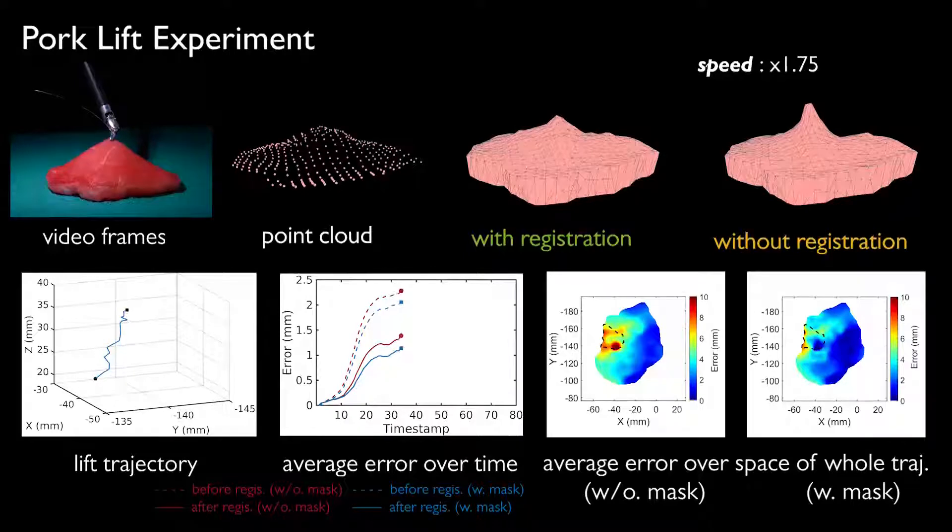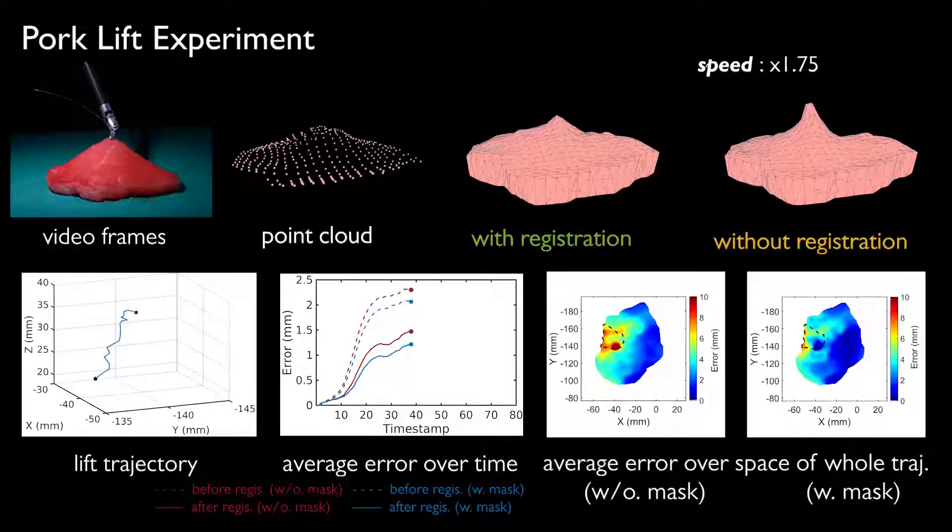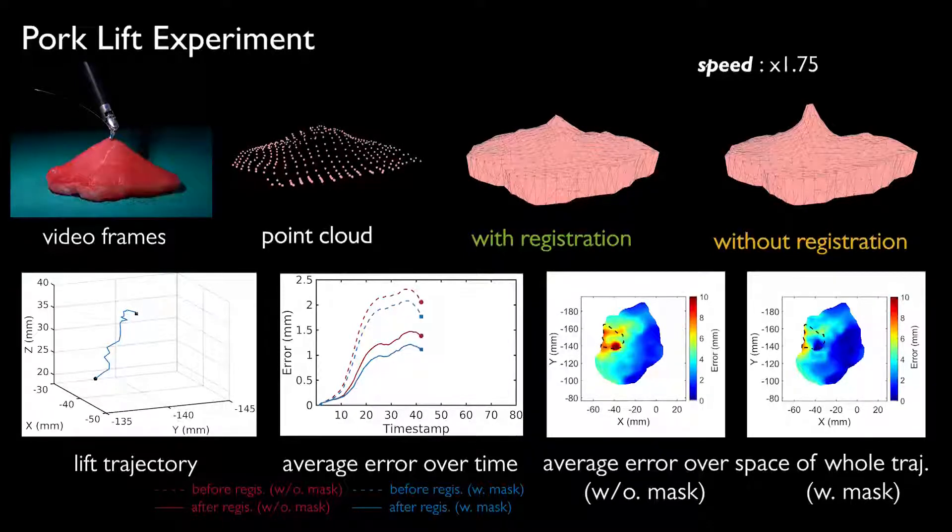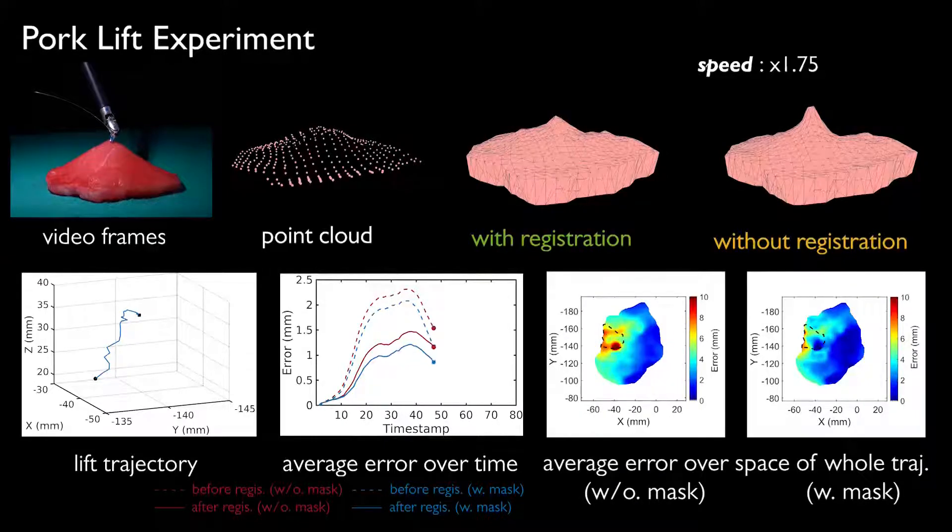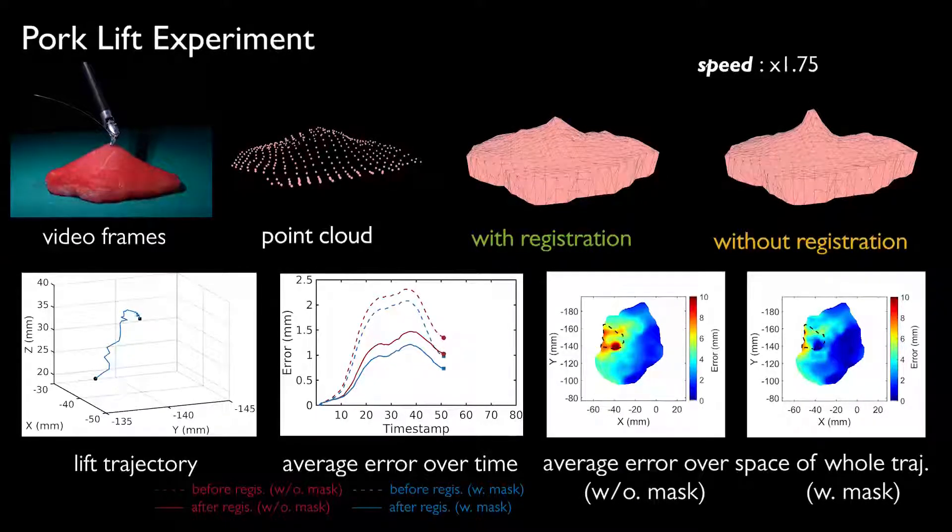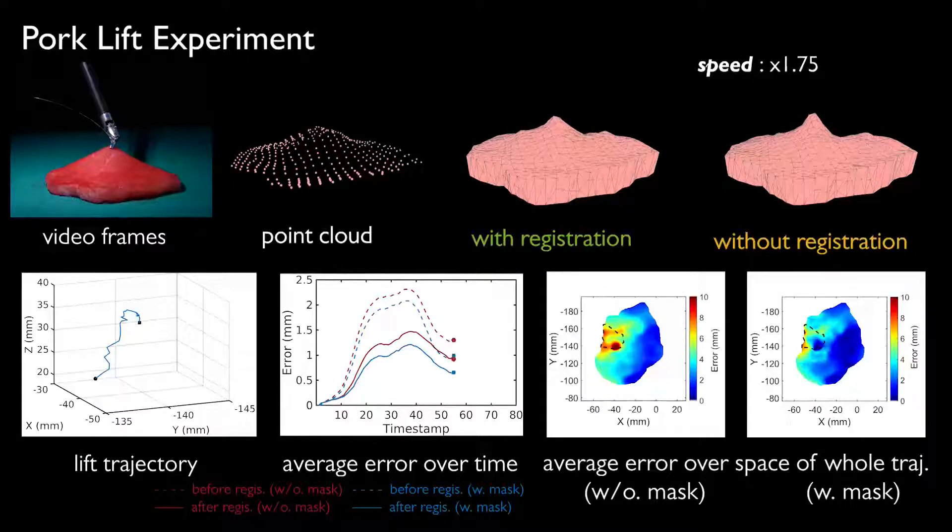The areas circled by the black dashed lines in the heat maps are the regions occluded by the surgical tool. It might cause inaccuracy because of the spatial temporal fusion-based point cloud reconstruction.